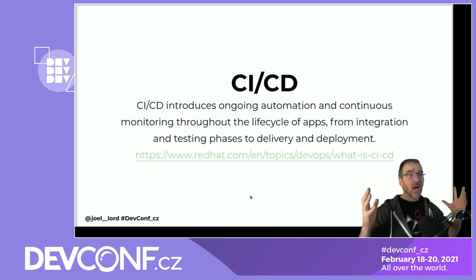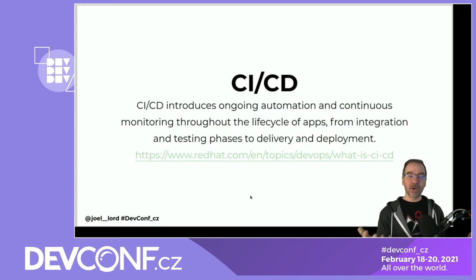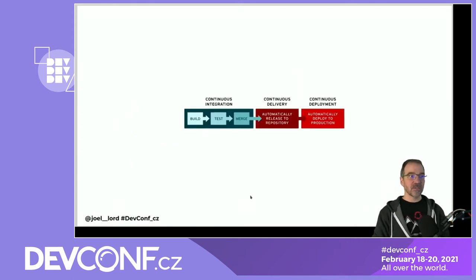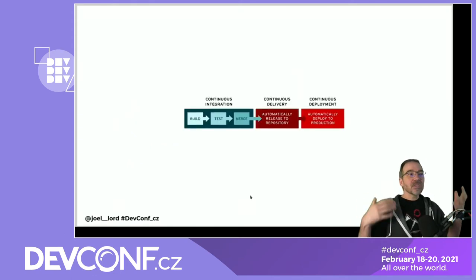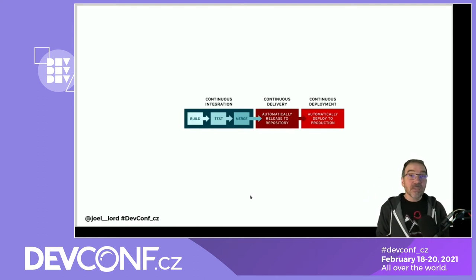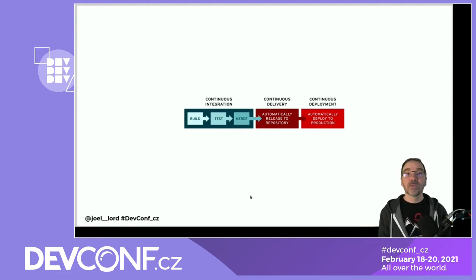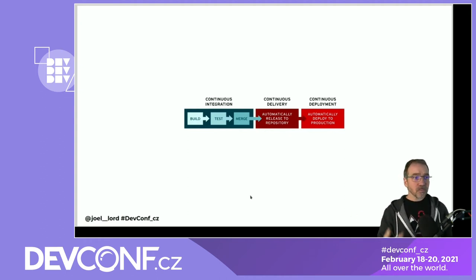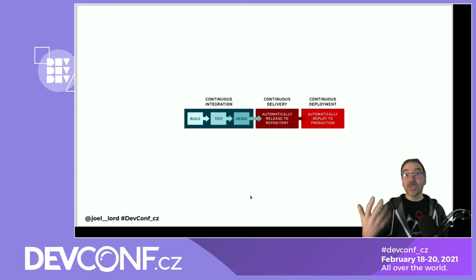So, CI/CD. What is CI/CD? It introduces ongoing automation and continuous monitoring throughout the lifecycle of apps, from integration and testing phases to delivery and deployment. It's a way to make sure that you're continuously building your application, running all the tests it needs, creating those images, and deploying them easier, faster, and more reliably to your servers.